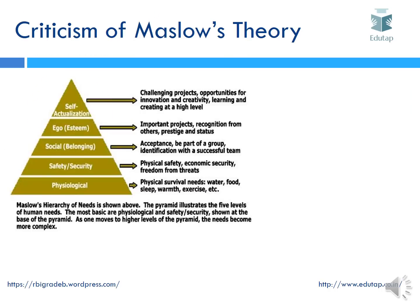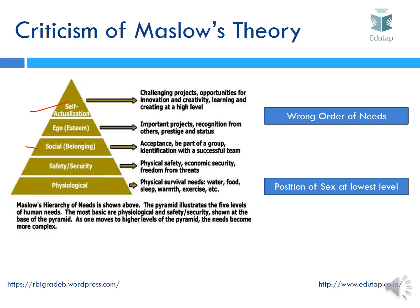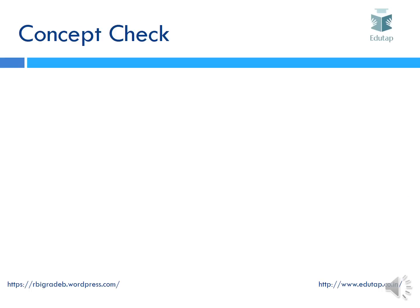Criticisms of Maslow's theory: the first is the wrong order of needs — some people feel that in a collectivist society, social belongingness holds much more importance than self-actualization, because the need to belong to a group is greater than the need to achieve self-actualization. The second criticism is the position of sex at the lowest level. Maslow placed sex as a physiological need, but some people feel that sex as an emotional connect is concerned with social belongingness and should be placed there instead.